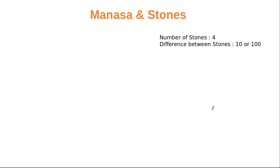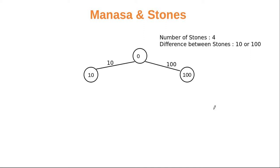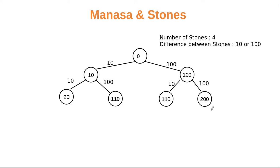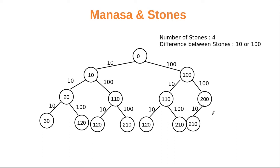Let's take another example with four stones where the difference is 100 or 10. The first stone is zero, the second stone can be 10 or 100, the third stone has four possibilities, and the fourth stone has eight possibilities.